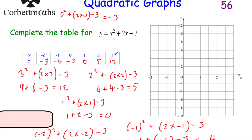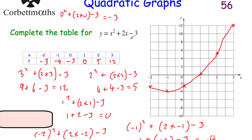Let's plot the points: 3, 12; 2, 5; 1, 0; 0, negative 3; negative 1, negative 4; and negative 2, negative 3. Now let's draw our parabola through those points. That's our graph of y equals x squared plus 2x minus 3, and if we went further it would come back up again.